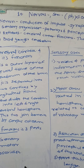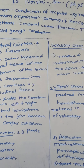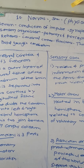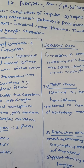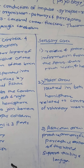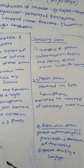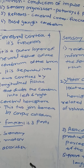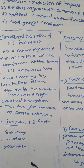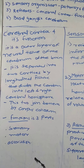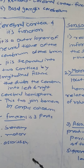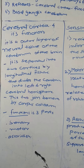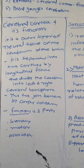Good afternoon students. The remaining topics of the nervous system are cerebral cortex, its function, thalamus, basal ganglia and cerebellum. Let's start with the cerebral cortex and its function.